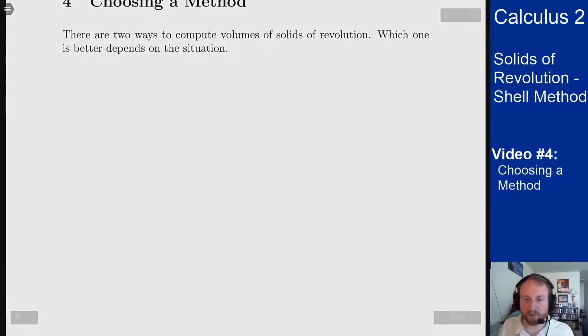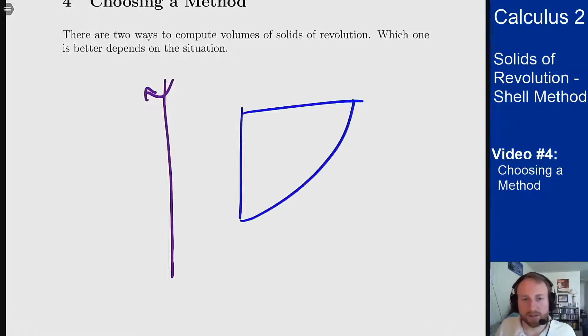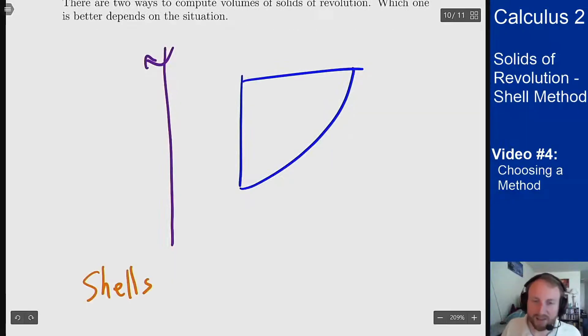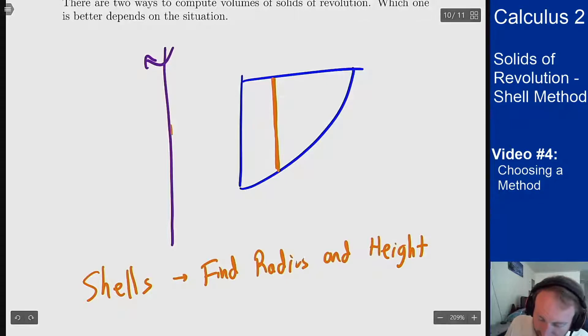Say you're revolving around a vertical axis and you've got your object sitting over here. If you want to use shell method you need to rotate this vertical segment around that line and you'll be able to find the radius and the height of that cylindrical shell. Basically the radius is the length in here and the height is the length of that segment.